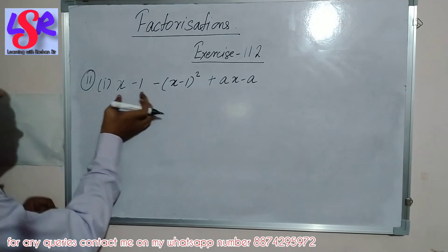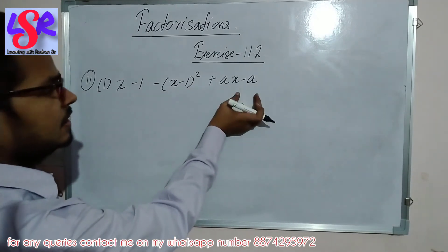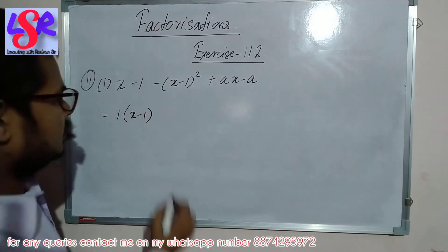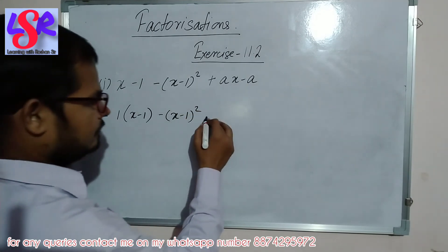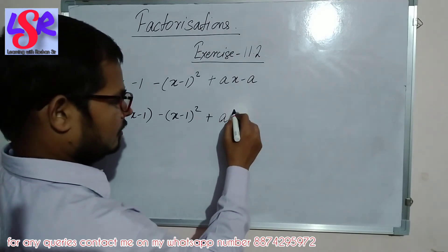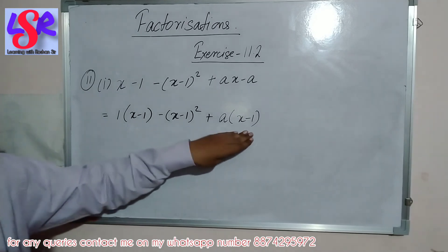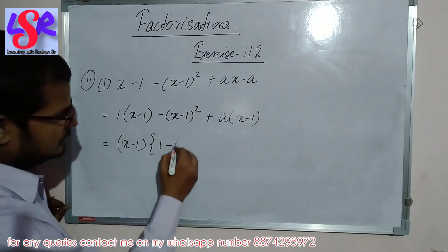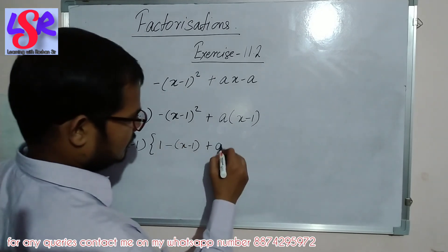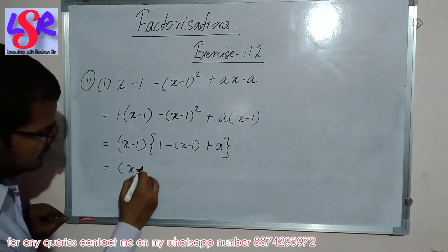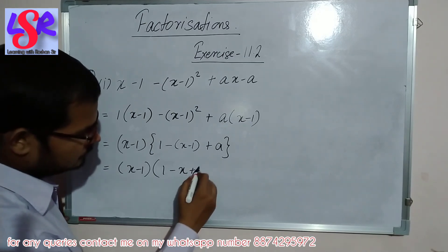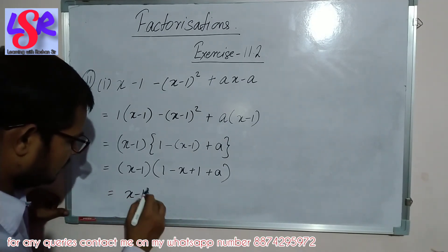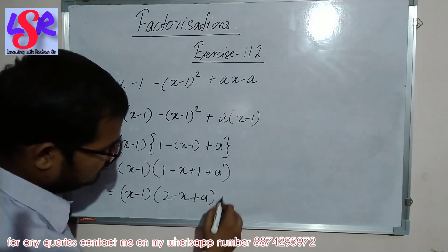Question number 11, first part — here we are having (x minus 1) minus (x minus 1) squared plus ax minus a. From the first two terms we take 1 as common, giving (x minus 1). The squared term is copied as is. From the last two we take a as common, leaving x minus 1. Now x minus 1 is common in all three positions. Taking it as common we are left with 1 minus (x minus 1) plus a. Opening and simplifying: x minus 1 times (2 minus x plus a) as the answer.